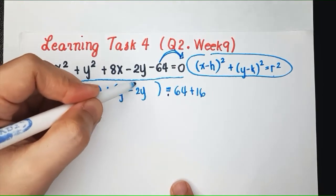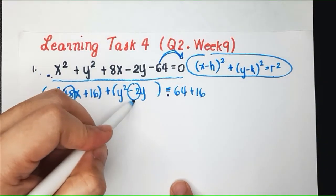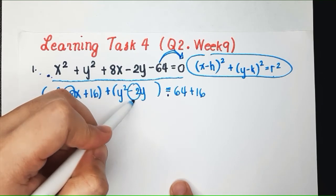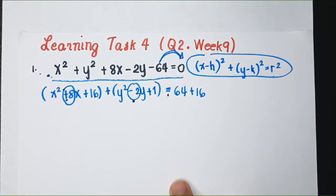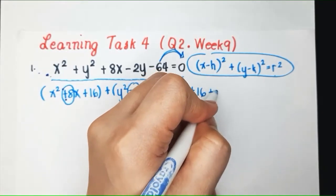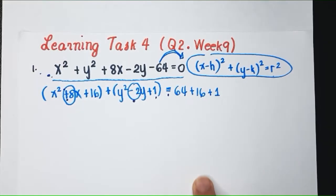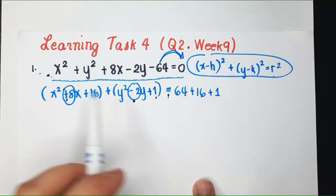Again, you divide this by 2. 8 divided by 2, you get 4. And then, you square it. Get 16. So, add 16 here. To keep them equal. What about here? Negative 2. So, negative 2 divided by 2, what do you get? Negative 1. If you square it, you will get positive 1. When you add 1 here, you need to add 1 here on the other side to maintain the equality.